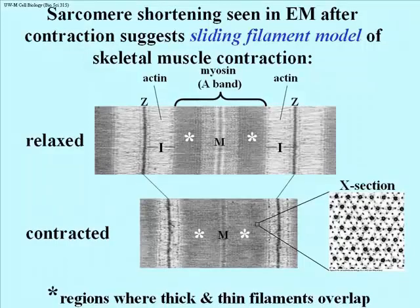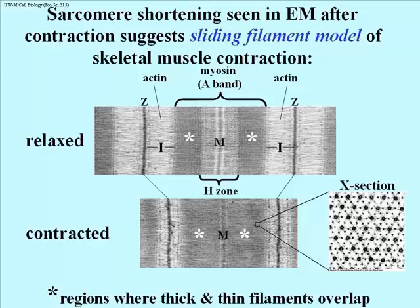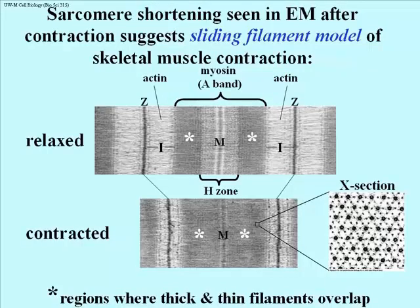The middle region of the sarcomere is present in both relaxed and contracted skeletal muscle. There's a region in the relaxed muscle called the H-zone — that's the myosin in the middle line that is not interacting with or overlapping actin. As you can see, if you look at the contracted sarcomere, the H-zone has been virtually wiped out, except for the midline.